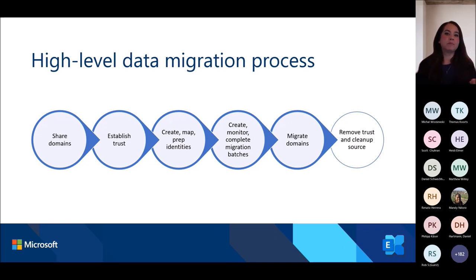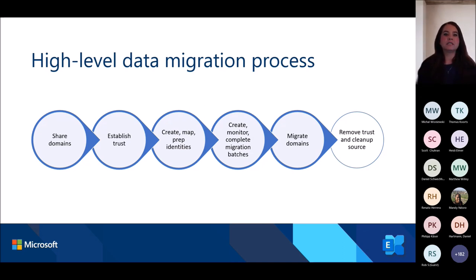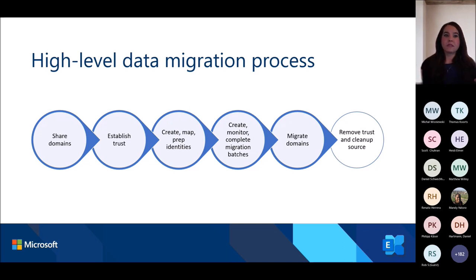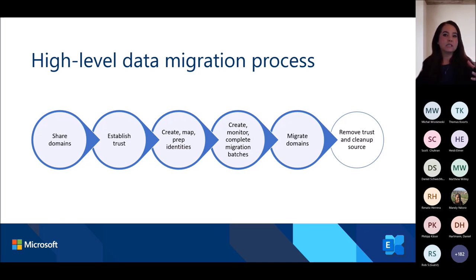Source and target tenant identities are mapped with workload-specific attributes to allow services to match the source identity to the target identity. After identity mapping, you'll create, submit, monitor, and complete migration batches of users such as mailboxes. In the final stage, after all users have been migrated, in some cases you'll want to cut over domains and eventually remove the trust configurations from both tenants.